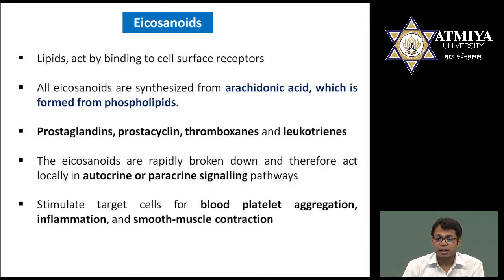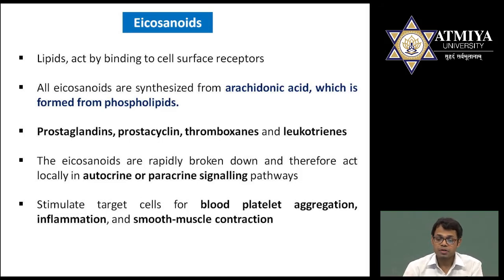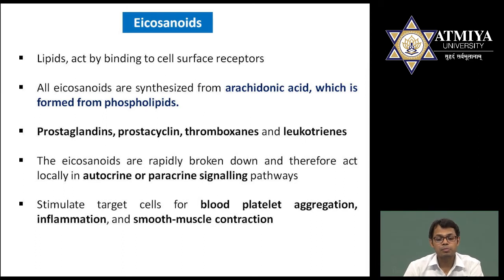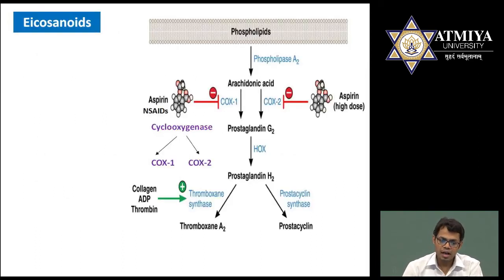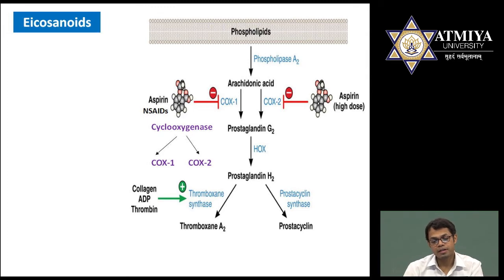The next category is eicosanoids. A common feature of all eicosanoids is that they are lipid in nature and act by binding to the cell surface receptor. All eicosanoids are derived from arachidonic acid, which is formed from phospholipids. Prostaglandin, prostacyclin, thromboxane, and leukotriene are the four famous examples of eicosanoids. They are rapidly broken down and therefore act locally in autocrine or paracrine signaling. They are responsible for blood platelet aggregation, inflammation, and smooth muscle contraction. Looking at the diagram: phospholipids produce arachidonic acid, which is converted into prostaglandin by cyclooxygenase.